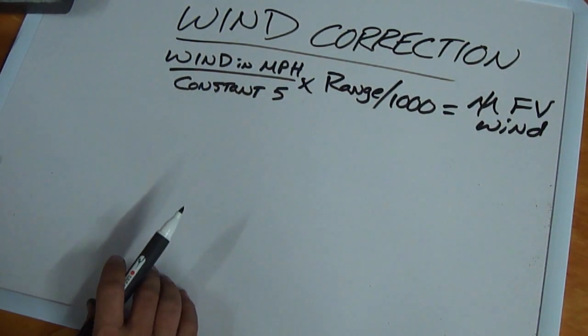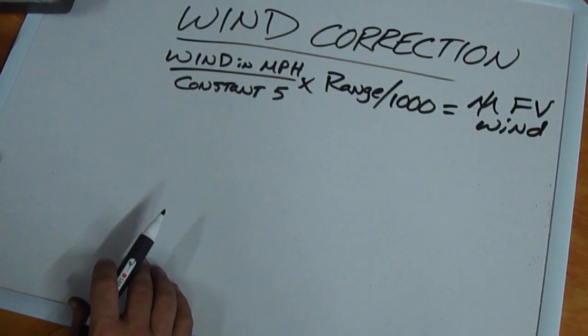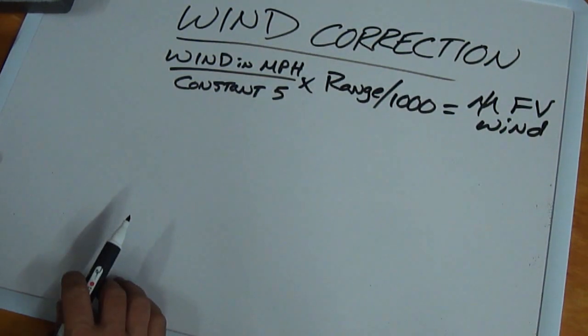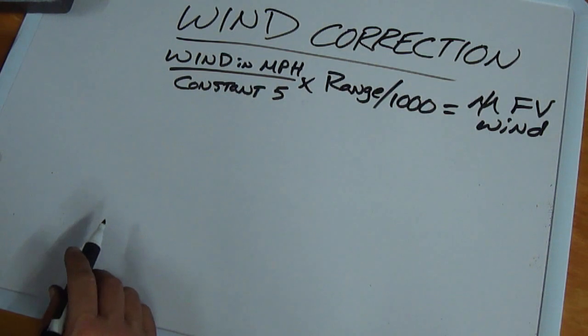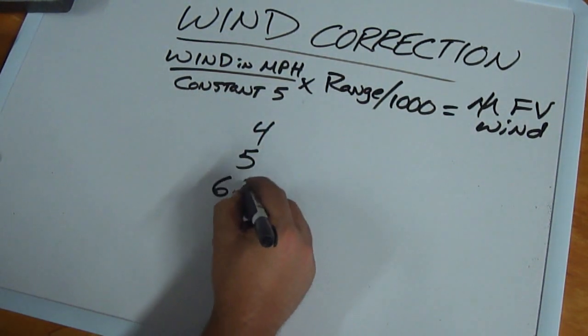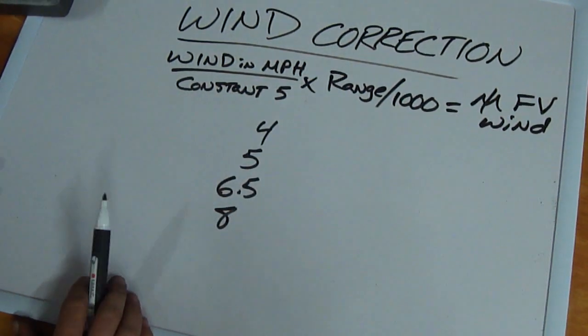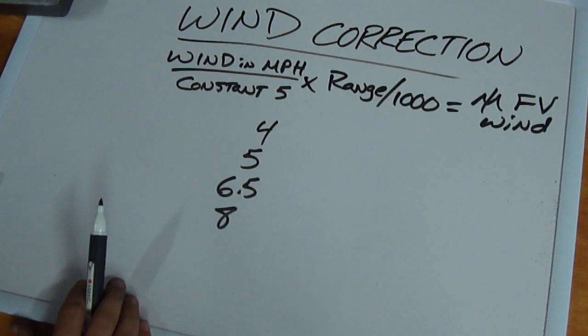When you've got it written out like this, it looks like a bunch of gibberish, but once you actually sit down and run through a couple of these in your head, it's pretty easy to make sense of it. Now keep in mind too, these constants that I just threw out there, we've got 4, 5, 6.5, and 8 depending on caliber. These are all going to be dependent on your loads, basically.